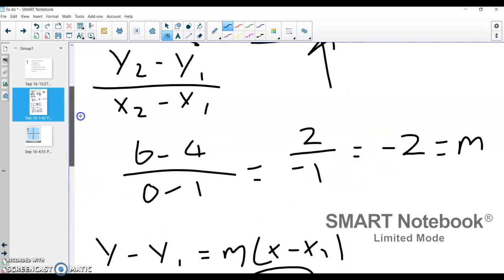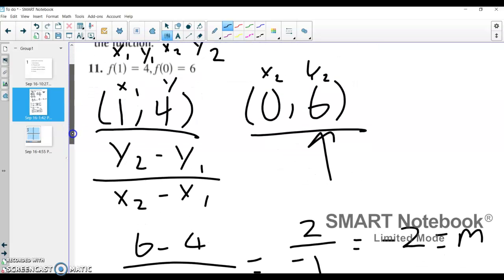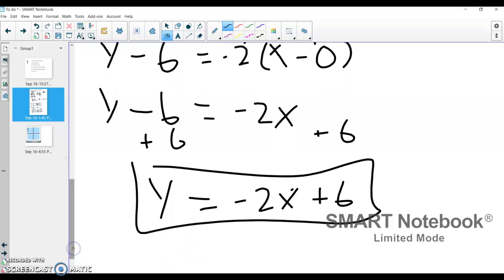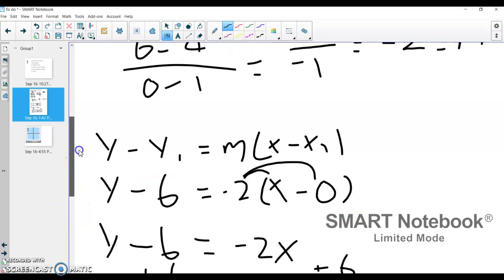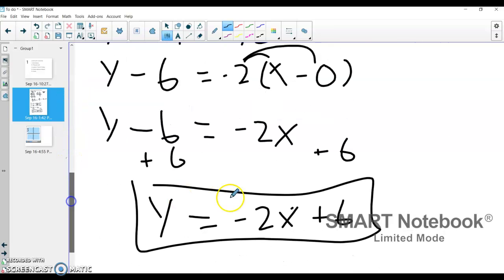That would be the linear function that would pump out these two indicated values. And if you want to check, if I plug 1 in, negative 2 times 1 gives me negative 2. Negative 2 plus 6 gives me 4. And so it meets that first parameter. If you plug in 0, negative 2 times 0 is 0, plus 6 gives me 6. And so it works.